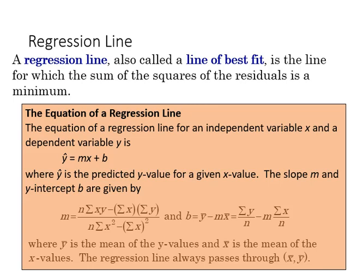The regression line, also called the line of best fit, is the line for which the sum of squares of residuals is minimized. The equation is ŷ = mx + b, where ŷ is the predicted y value for a given x value.